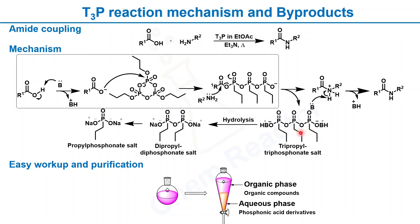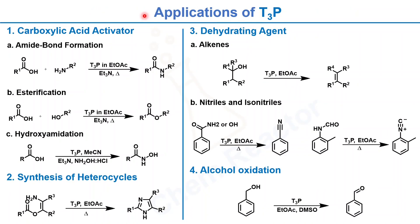All these byproducts are very water-soluble, which makes the workup very simple. After completion of the reaction, you can directly add water into the reaction mixture slowly, because this reaction is exothermic. Once you quench the reaction mixture with water, you get two layers: the organic layer — if you are using ethyl acetate, which has a density less than water — your compound goes into the organic phase, and in the aqueous phase you have the phosphonic acid derivatives. This makes layer separation very easy, and you can wash out all these salts in the aqueous layer, simplifying further purification of your final amide product.